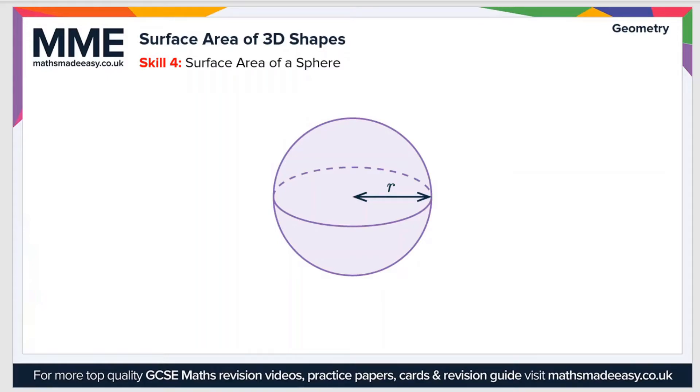The last skill is the surface area of a sphere, and this is probably the easiest one because it's just a simple formula that you need to remember. A = 4πr², so the area is 4 times π times the radius squared.